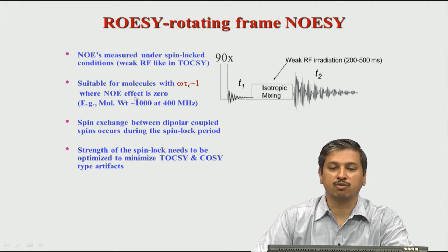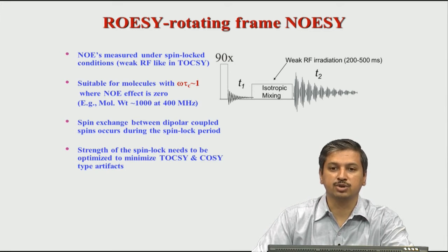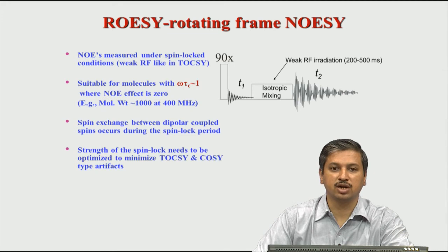If the NOESY effect is zero, what will the spectrum look like? In the NOESY experiment, if spin A does not transfer completely to B, we get what is called a diagonal peak — a peak arising from incomplete magnetization transfer. So if there is zero transfer, all the peaks will be on the diagonal because nothing is transferred to anything else. In your NOESY spectrum, if you see only diagonal peaks and no cross peaks, it means your problem is because of this omega times tau_c issue.